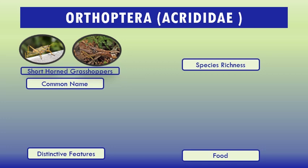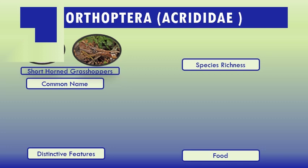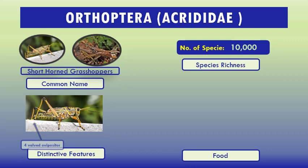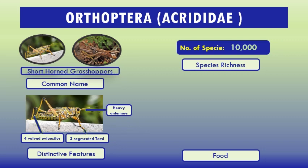They are found in nearly all habitats. They are generally phytophagous but vary in specificity. Eggs are deposited within pores in the soil; pods may contain 200 to 300 eggs depending on the species. About 10,000 species are known. Distinctive features: 4-valved ovipositor, 3-segmented tarsi, heavy antennae. Food: feed on all types of crops.